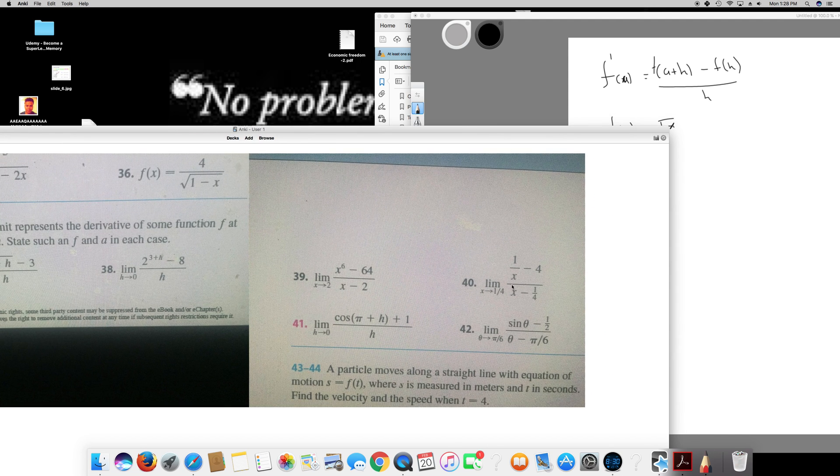And for 40, f of x is going to be 1 over x and a is going to be approaching 1 over 4, so this is going to be 1 over 4. A is going to be 1 over 4, so that's my answer for this question.